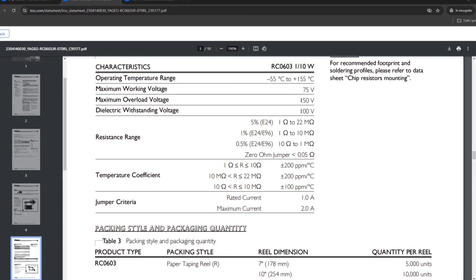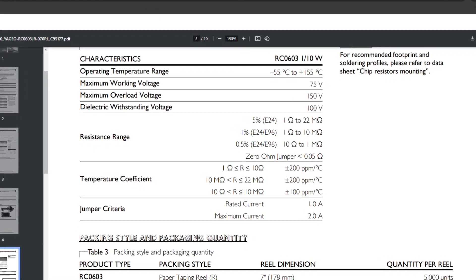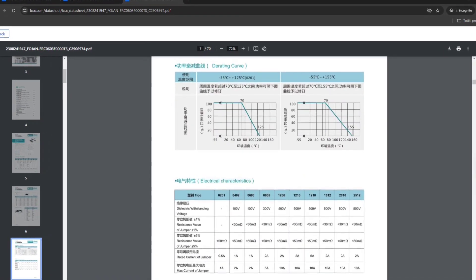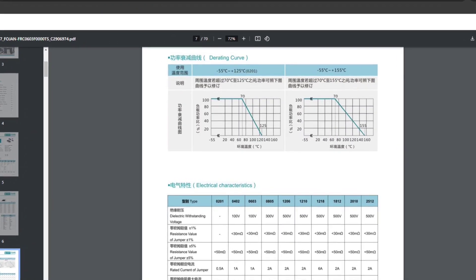By the way, guys, remember that a zero ohm resistor is not exactly a zero ohm resistor. The datasheet like this one will tell you the effective resistance and also the maximum current and voltage that can withstand.